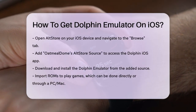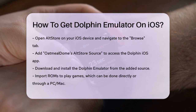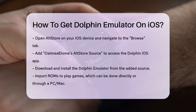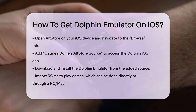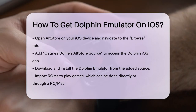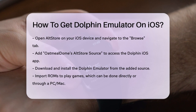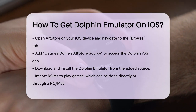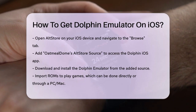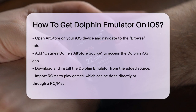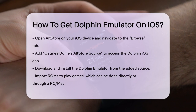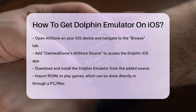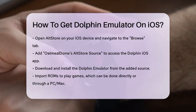Once you've added this source, you should see the Dolphin iOS app as an option to download. Click the icon to download and install it. After the installation is complete, you can run the Dolphin emulator just like any other app on your device. However, you won't be able to play games right away. You need to manually add games by importing ROMs, which are digital copies of the games. You can import these ROMs directly from your iOS device, through the Dolphin app on your PC or Mac, or even using iTunes file sharing options.